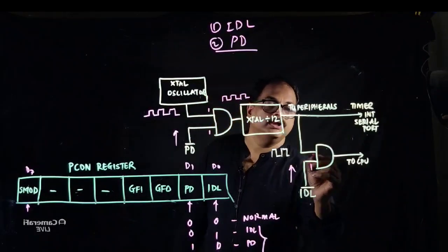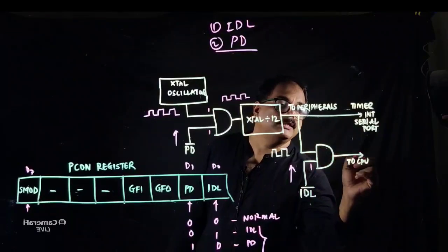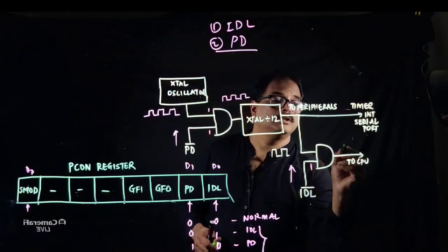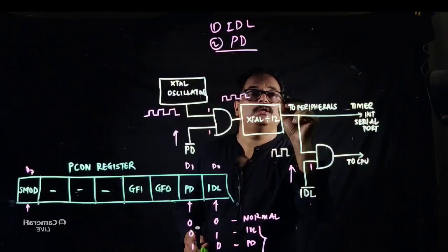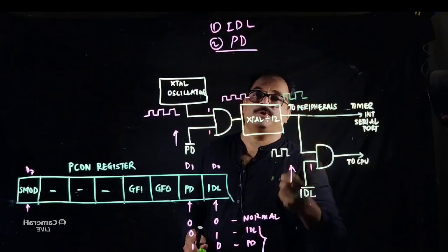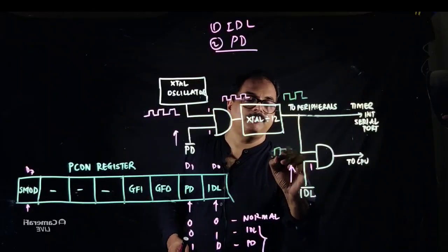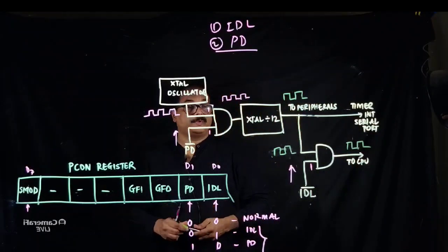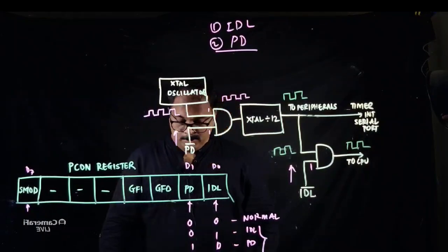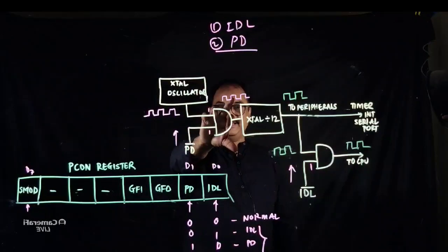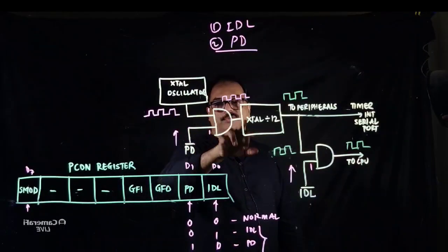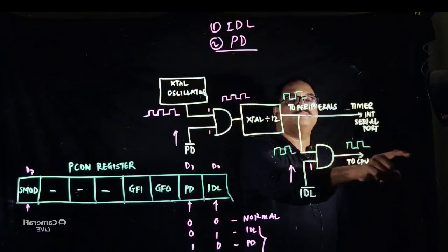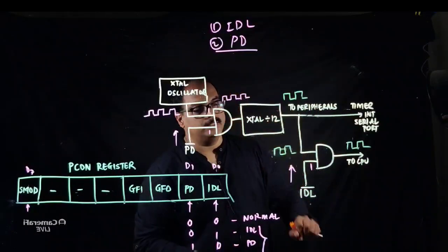There is another AND gate whose inputs come from the crystal oscillator divided-by-12 block and the idle bit. If you keep the idle bit as one, the divided-by-12 frequency will be passed through and given to the CPU. For this gate to produce the output frequency, PD bar needs to be one; and for this second AND gate to give the same frequency to the CPU, idle bar needs to be one.